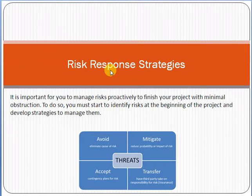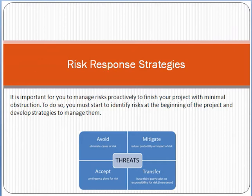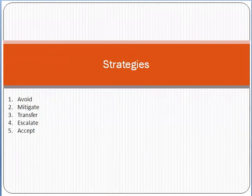Risk response strategies have two categories: one for positive risk and one for negative risk. Positive risk means the risk has a positive impact on the project and becomes an opportunity. Negative risk means it has a negative impact and becomes an issue. For handling negative risk, we have the following five strategies: Avoid, Mitigate, Transfer, Escalate, and Accept. We will see these strategies one by one in detail.